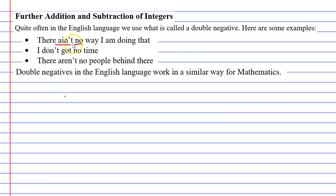And the saying goes that a double negative makes a positive, so when we say there ain't no way I'm doing that, I'm actually saying I am doing that. It becomes a positive statement.